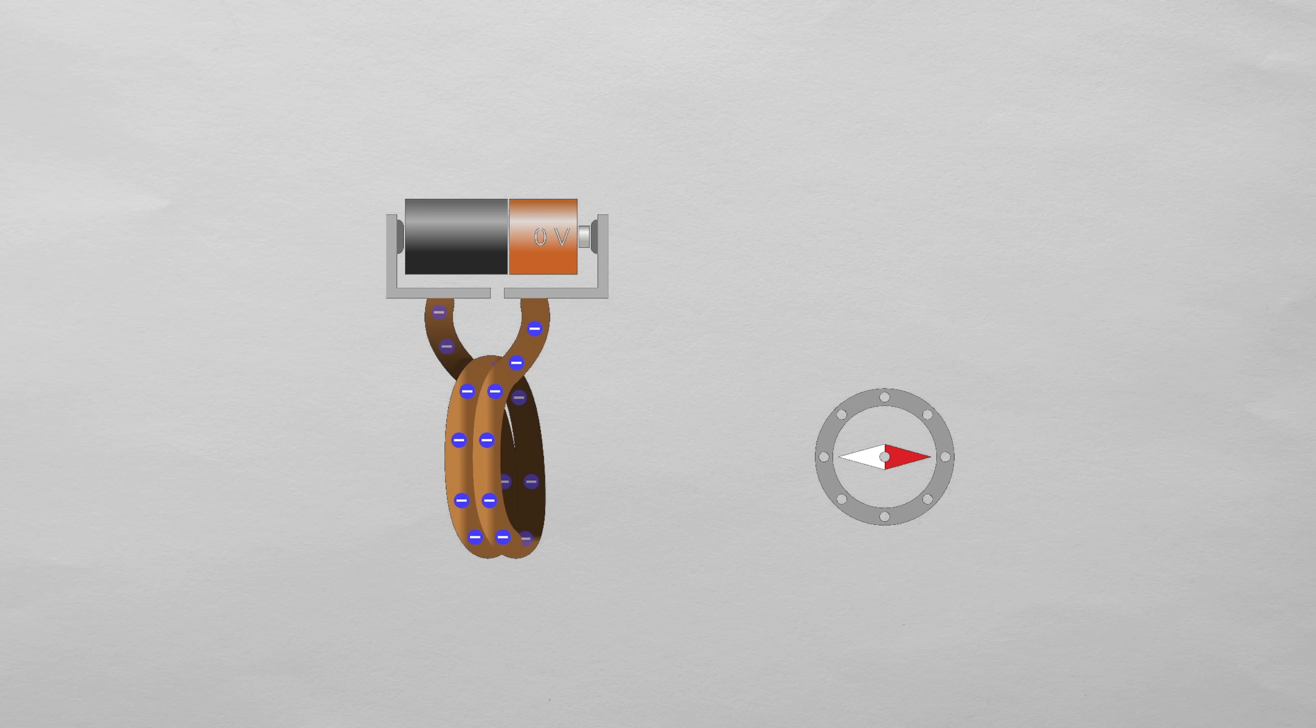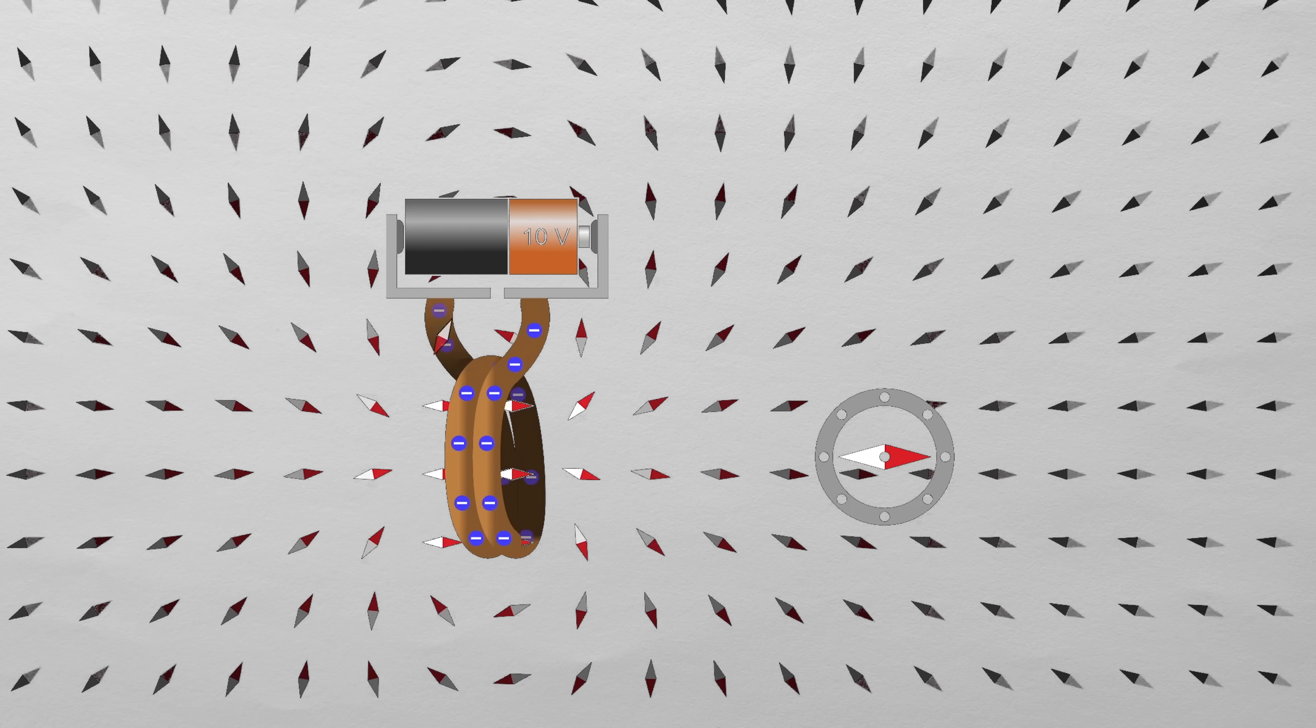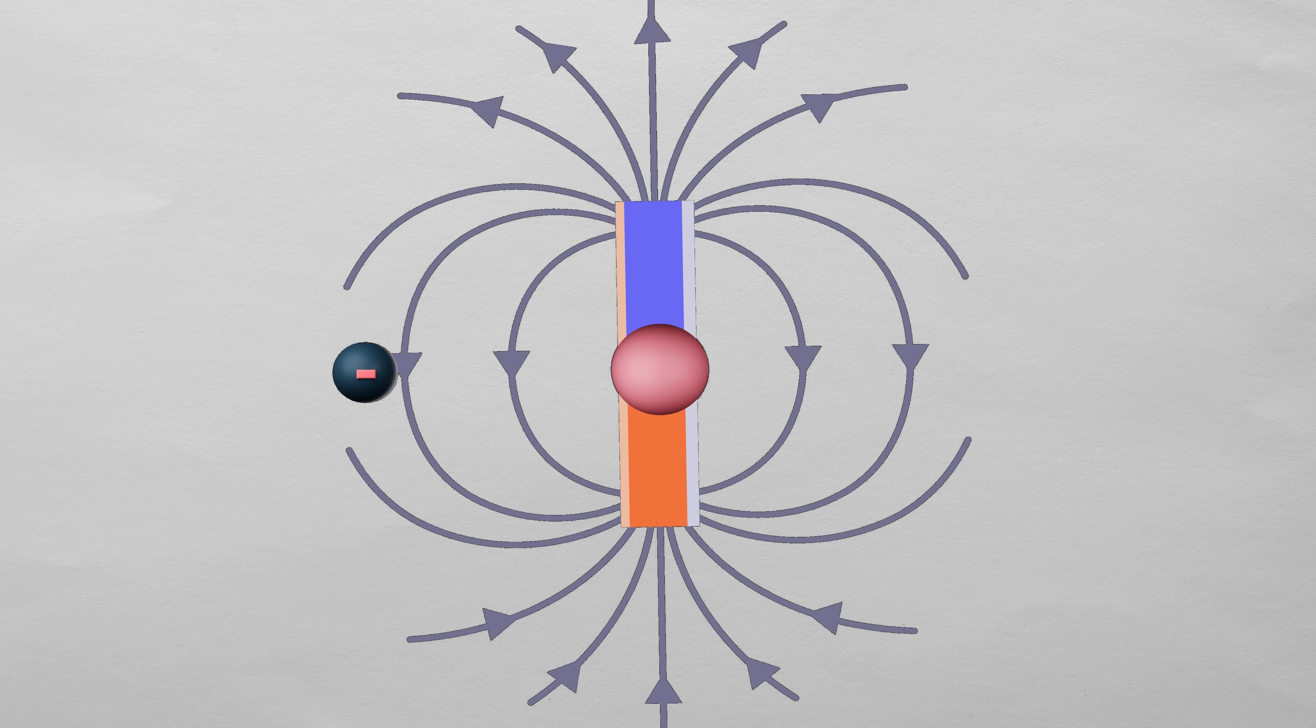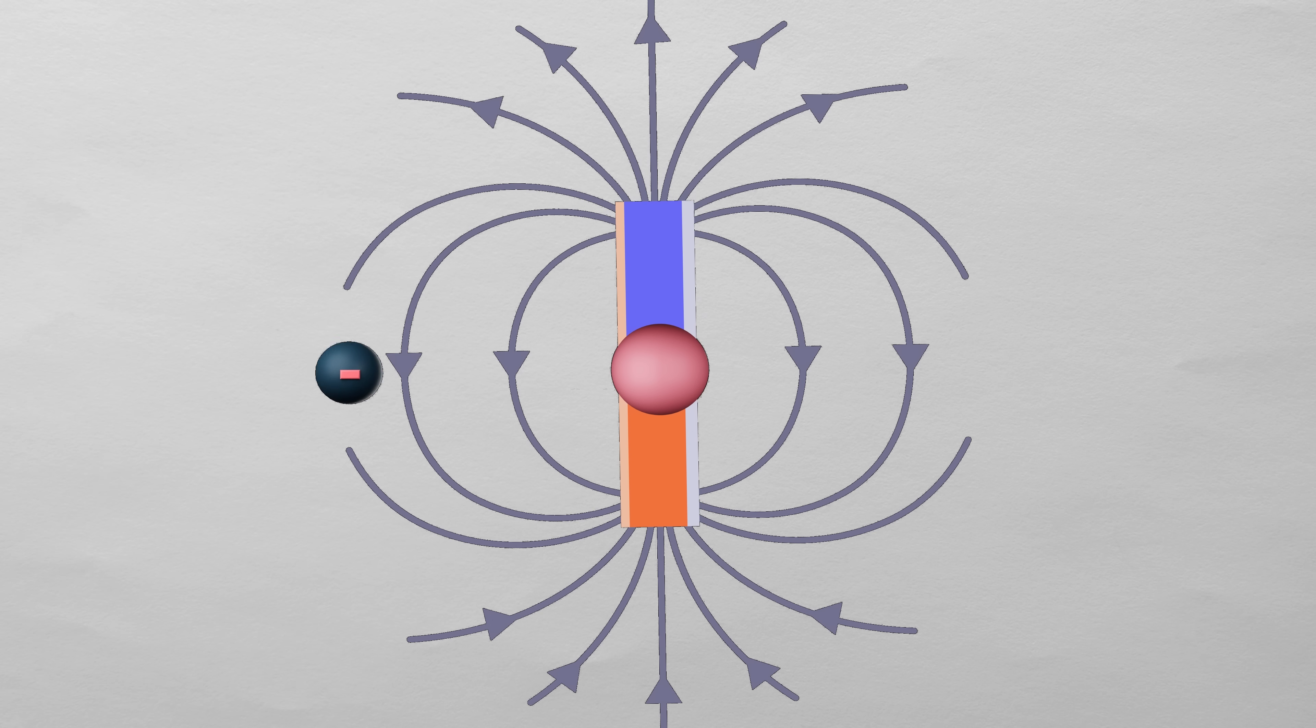So any moving charge creates a magnetic field, even a single electron. That means every electron orbiting a nucleus is generating a tiny magnetic field. This is called the orbital magnetic field.